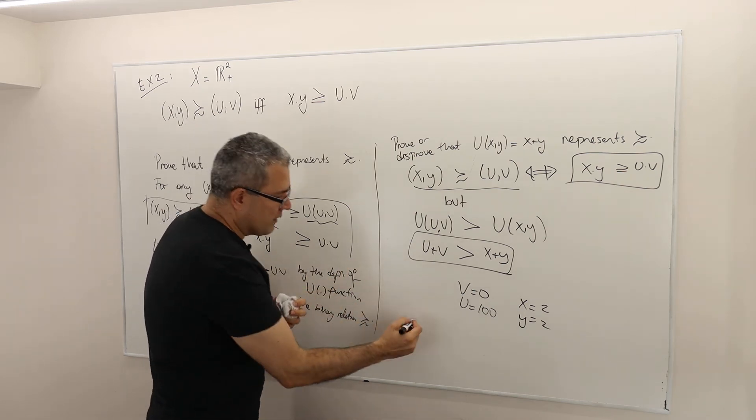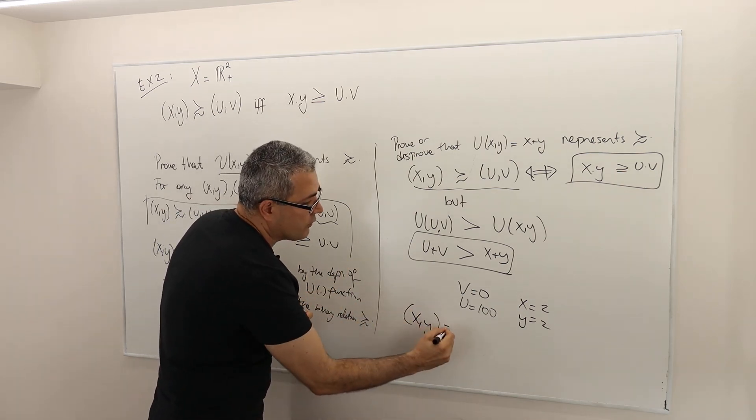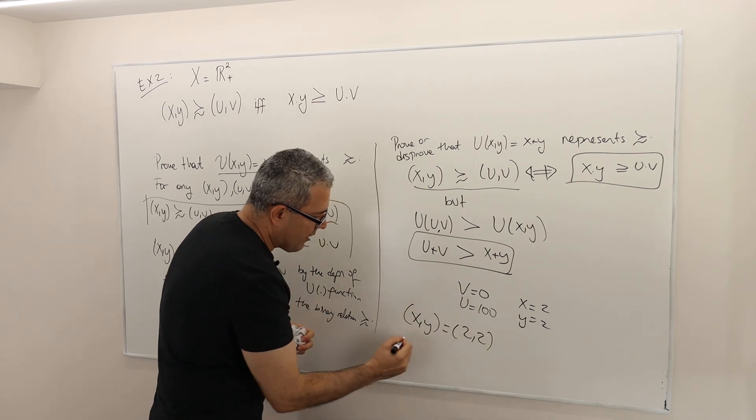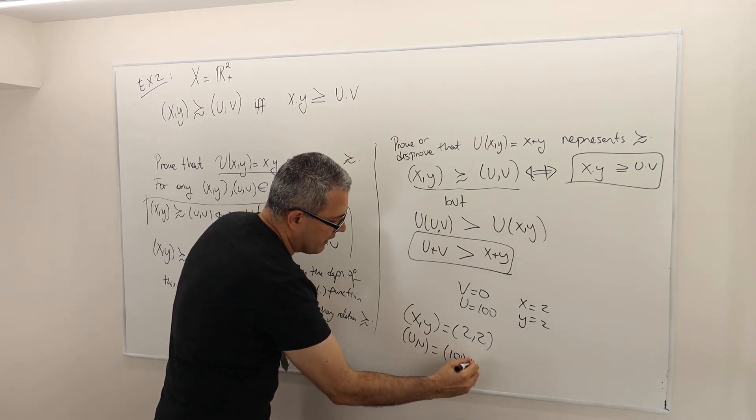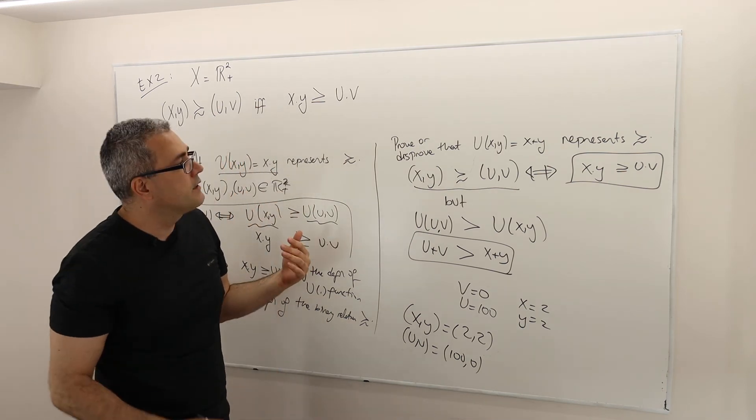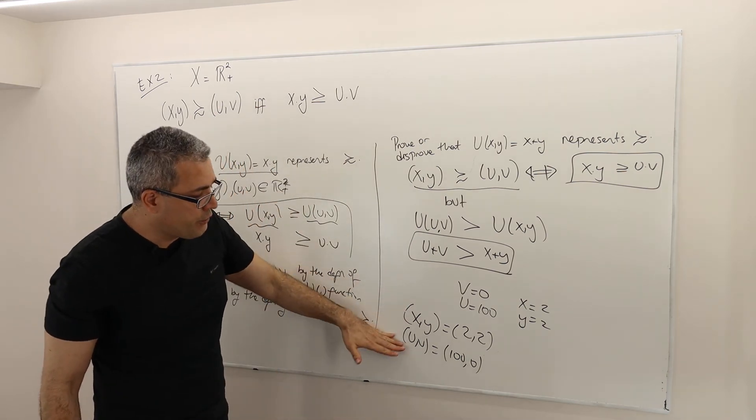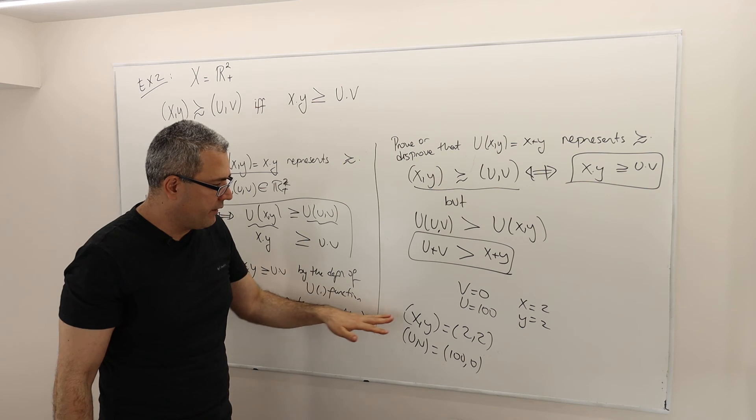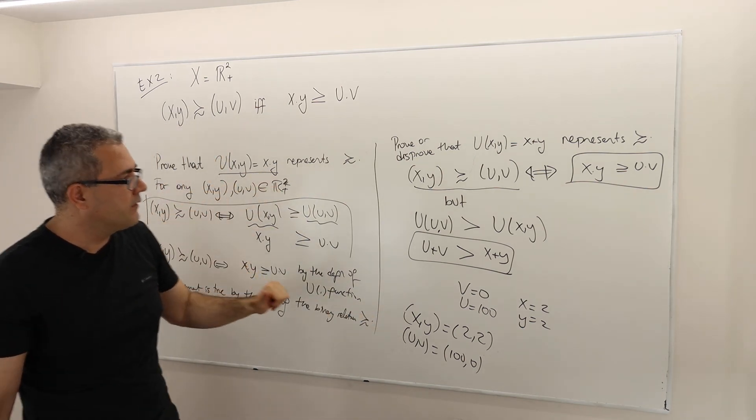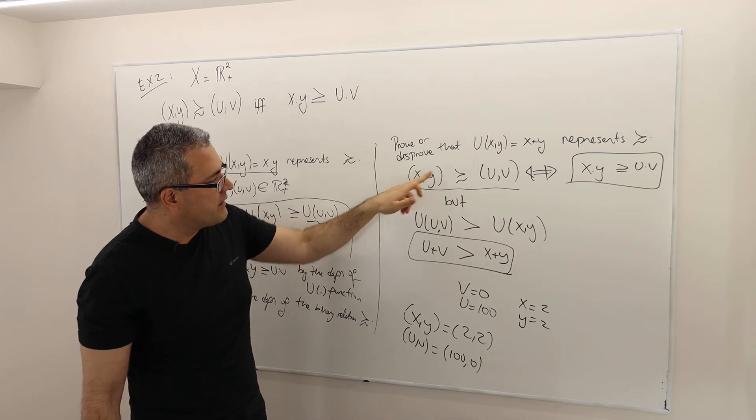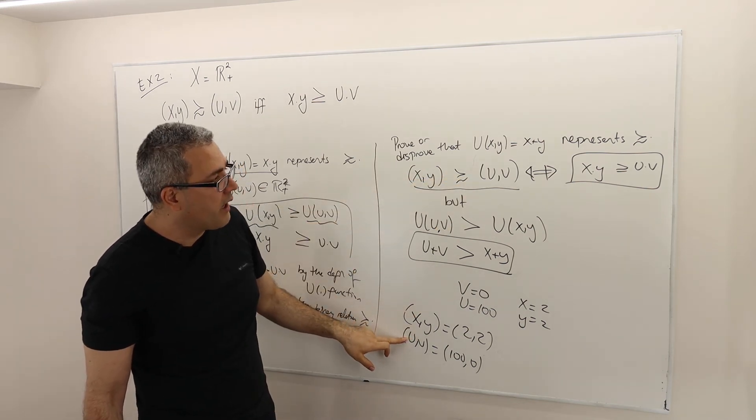So once again, X, Y is equal to 2 and 2, and U, V is equal to 100 and 0. So for these two bundles, these alternatives, both of them are in R plus squared. I know that X, Y is at least as good as U, V. Why is that so?